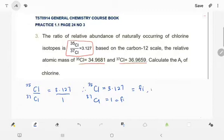So what is the Mi? Mi for Cl-35 is 34.9681 and the Mi for Cl-37 is 36.9659.